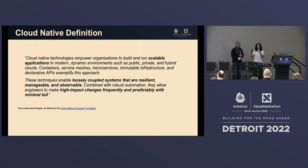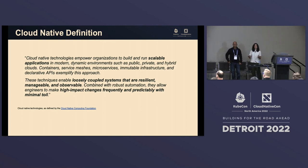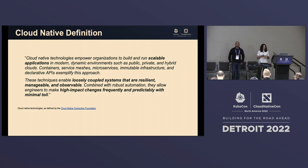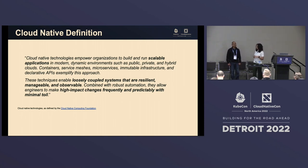Now that we know what the edge is, taking a step back: what is cloud native? The CNCF has their own definition, but cloud native is really that movement away from monolithic, tightly-coupled architecture and more into a microservice approach, where you run highly scalable applications. It's loosely coupled and resilient because of that. A big part of it is observability — you're able to take management actions based on what you observe, making high-impact changes frequently.